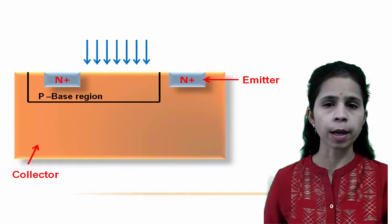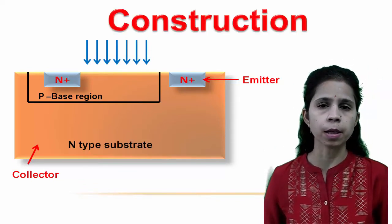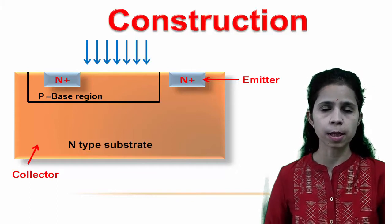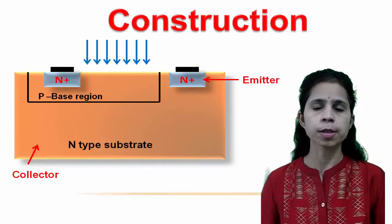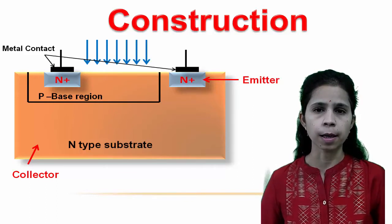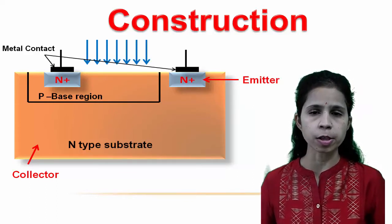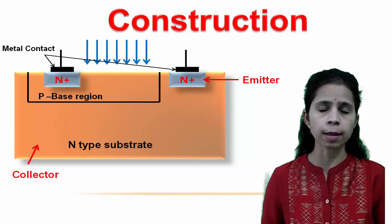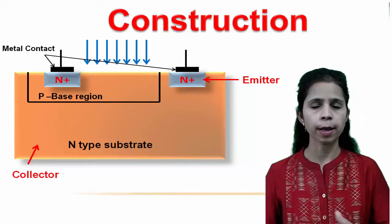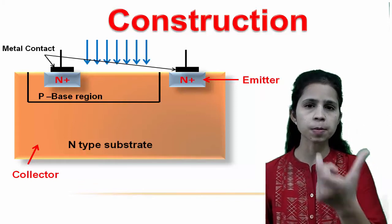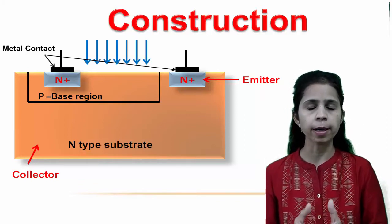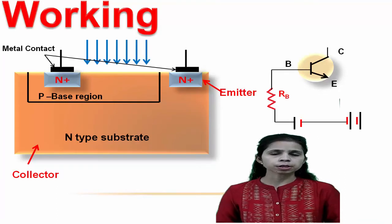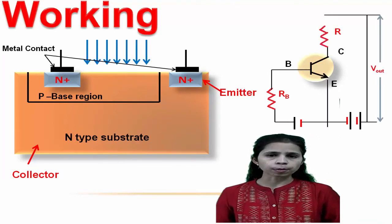A phototransistor is a three-layer semiconductor device in which the base is the light-sensitive region. It is manufactured similarly to normal transistors but with larger base and collector areas. The phototransistor consists of an N-type substrate into which the collector, base, and emitter are made by diffusion and ion implantation techniques. Earlier, silicon and germanium created a homogeneous structure; now elements like gallium arsenide create a heterogeneous structure with greater conversion efficiency of light into electrical signal. A lens over a hole in the collector surface allows maximum light to reach the collector-base junction.